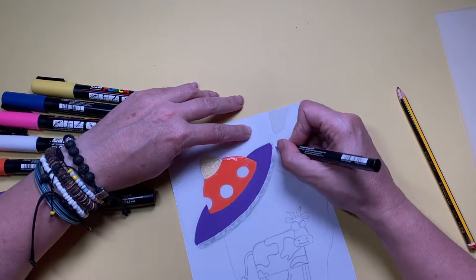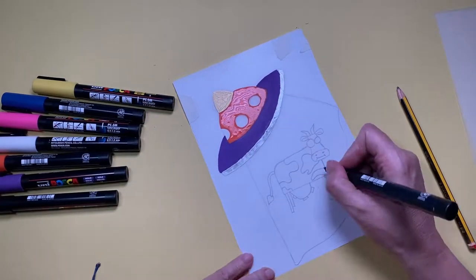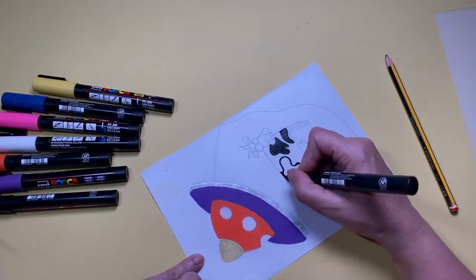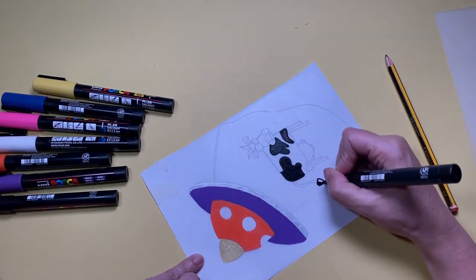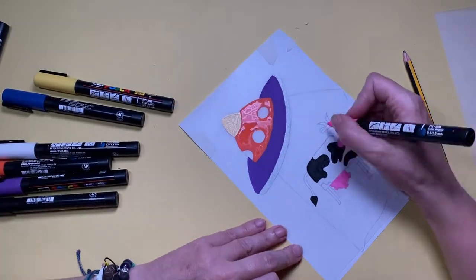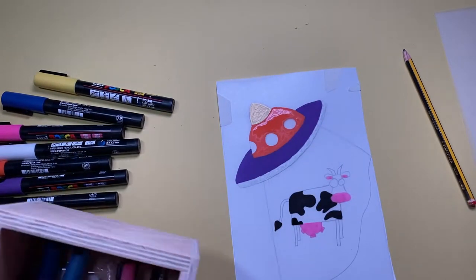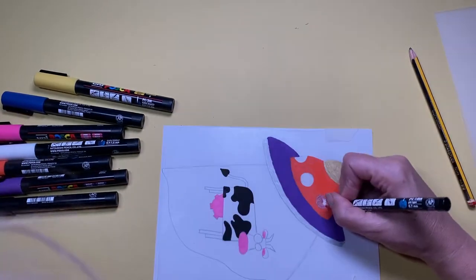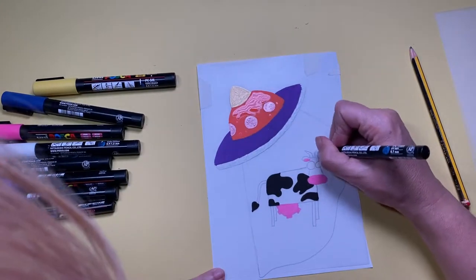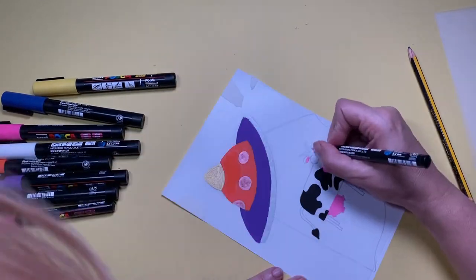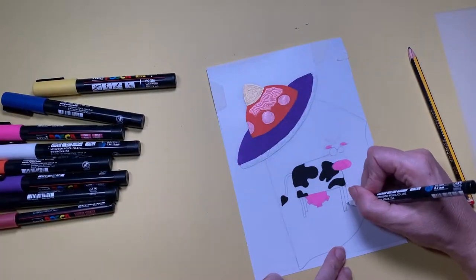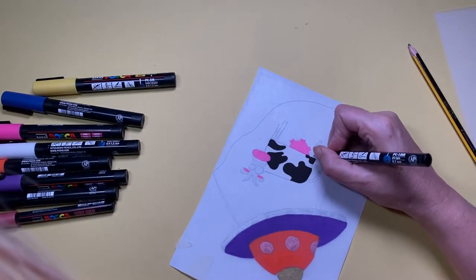Just adding the black splodges or patches to my black and white cow and giving him a nice pink nose, pink udders, and pink innards to his ears. Adding some nice metallic pink windows to my flying saucer and then starting with filling in the white on my white cow, which started to become a little bit problematic because I couldn't see where I painted in white and where the white paper was underneath.